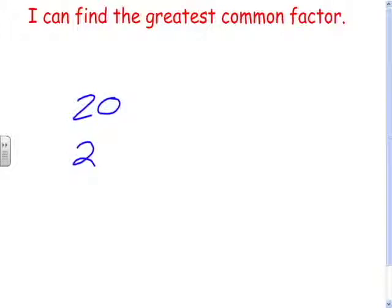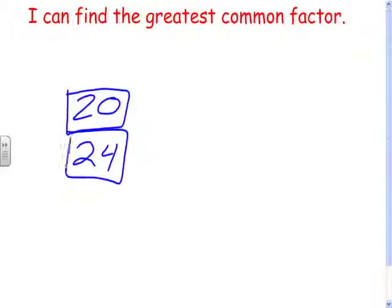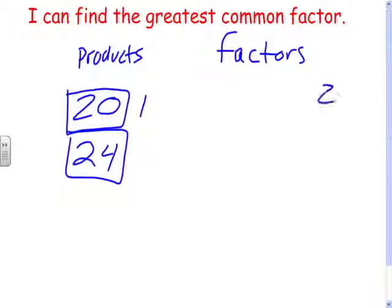Let's try one more. 20 and 24. What are the factors of 20? These are the products, these are the answers. Now we want to know what numbers are factors. What numbers are factors of 20? So 1 and 20. 2 times anything? Yep, 2 and 10. Now, there won't be any that are bigger than 10, because that's the next one. 3 times anything equal 20? No. 4 times anything? 4 and 5.